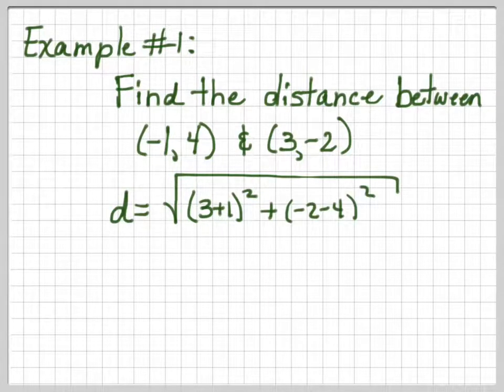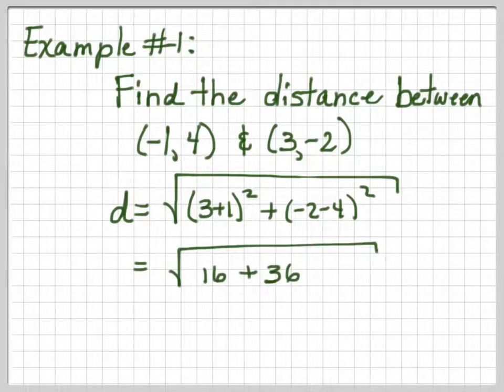And negative 2, negative 4 would make it negative 6. So we're going to have 16 plus 36 and then add those together and take the square root.